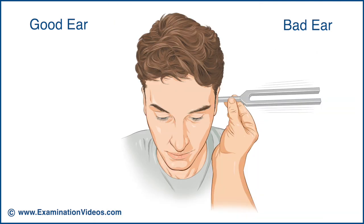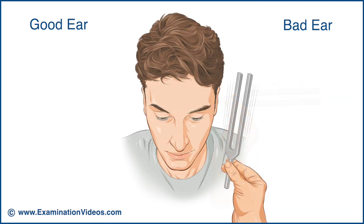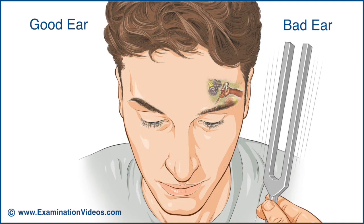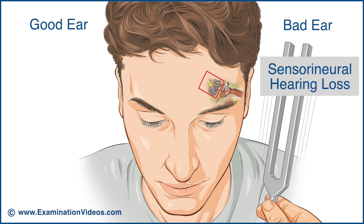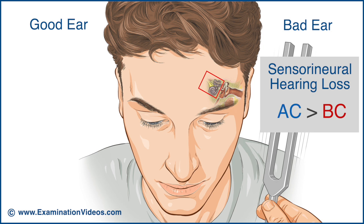On the other hand, if the patient reports that they can hear the sound again, it suggests a sensorineural hearing loss in the bad ear. This is because, in a sensorineural hearing loss, even though the patient's hearing is diminished, the normal pattern of greater air conduction than bone conduction is maintained.